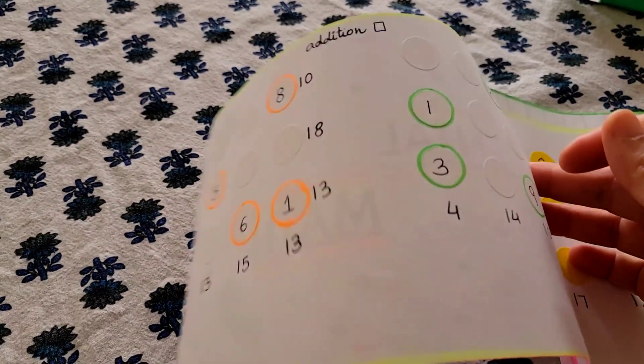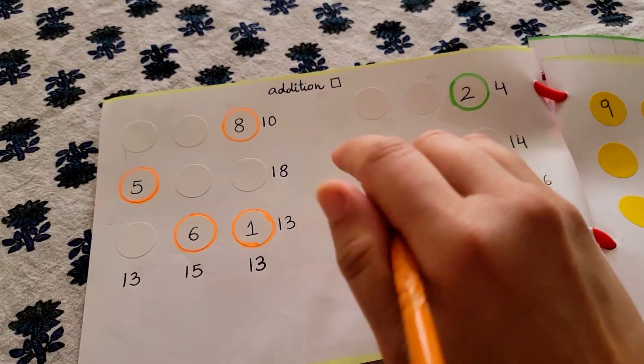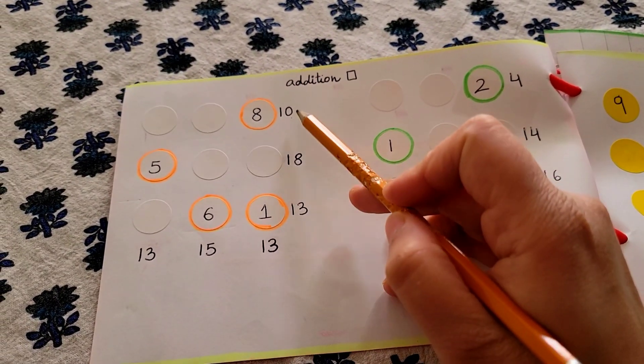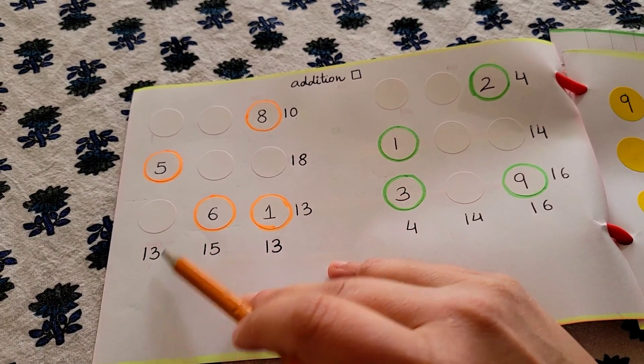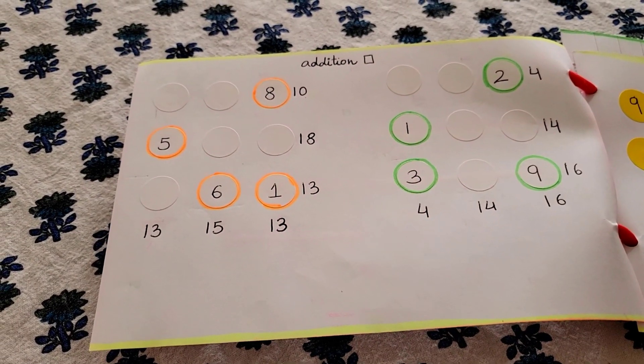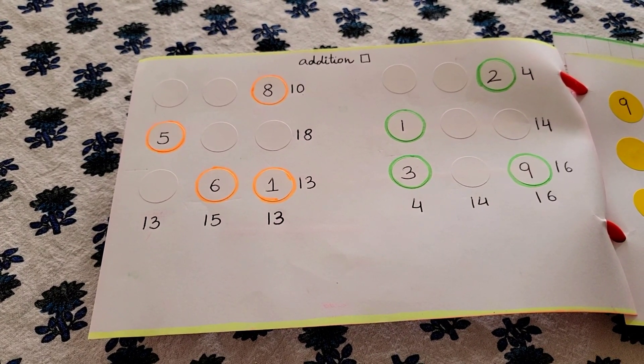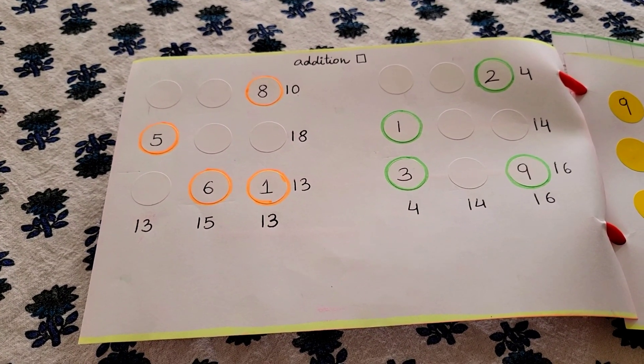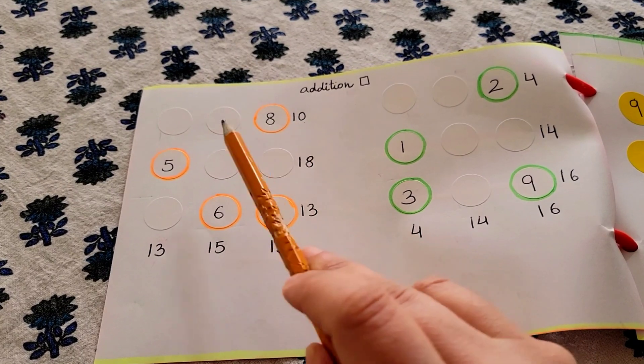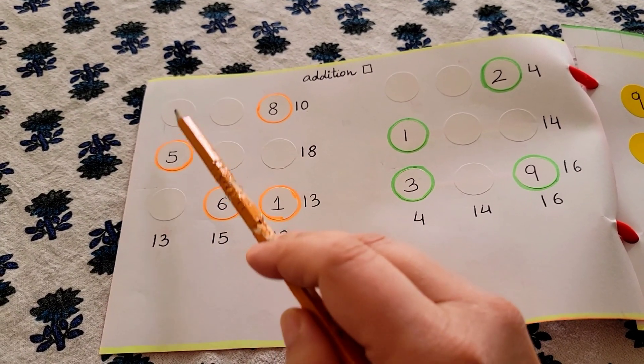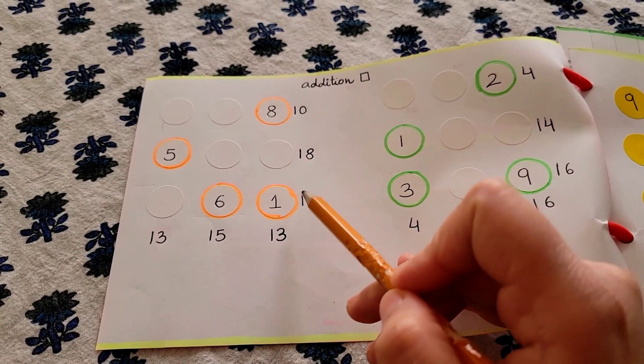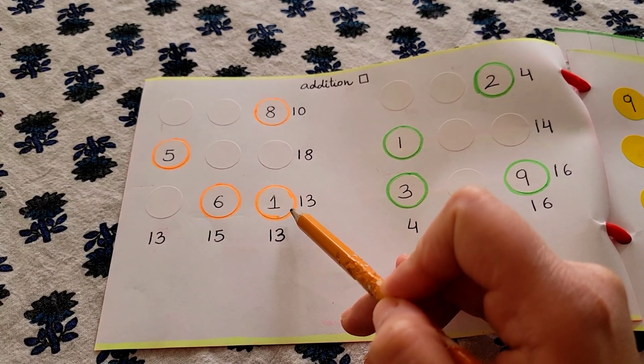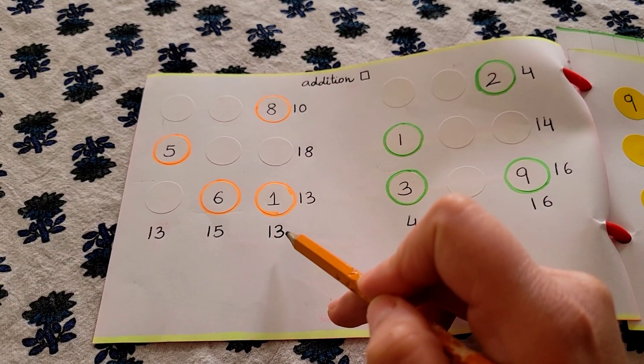So the activity that you see here says addition and the box. So you have 10, 18, 13, 13, 15 and 13 right here and you have some numbers. So what the child needs to do is they have to figure out how to make a combination of numbers to get this addition. So like if this is 10, this is 8 plus 1 is 9. They have to make it as a total of 13.